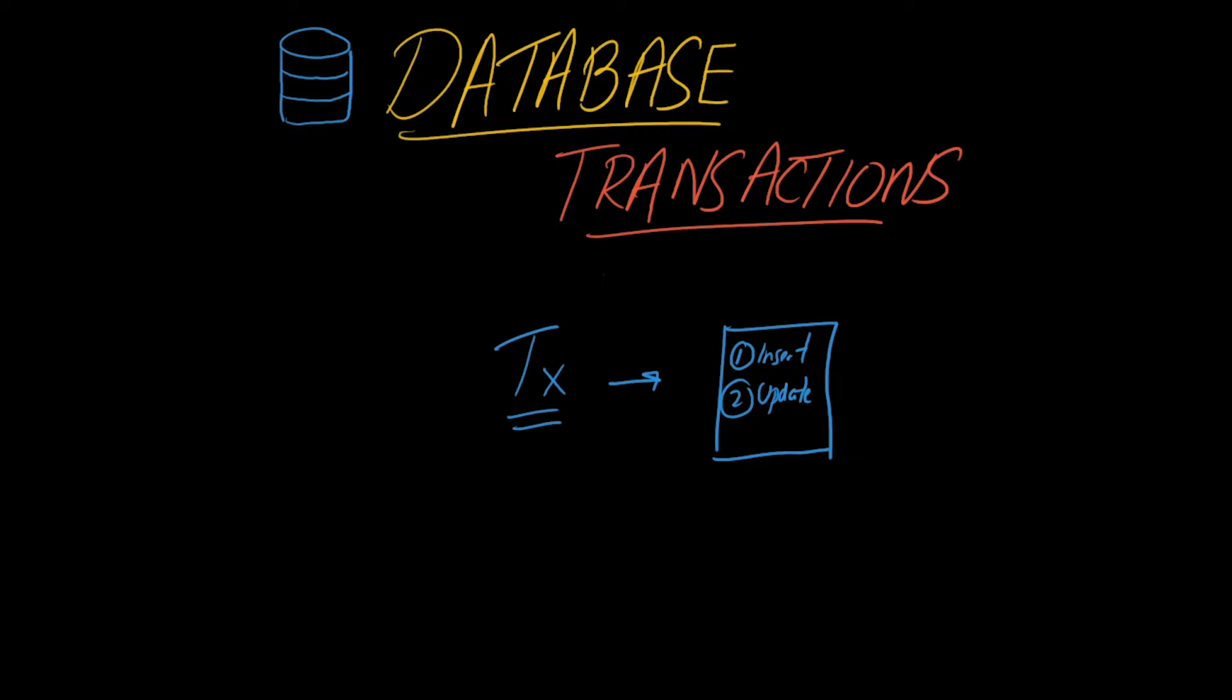This unit, these two things together, is what is considered a transaction. An important trait of a transaction is the fact that these two things must either succeed or fail together as a unit. You can't have a scenario where you successfully insert data into one table but fail to update. That's called a partial failure scenario. This is not allowed for something to be considered a transaction. It must be all or nothing.